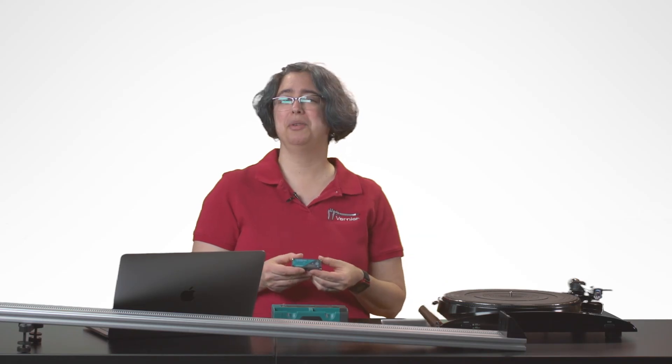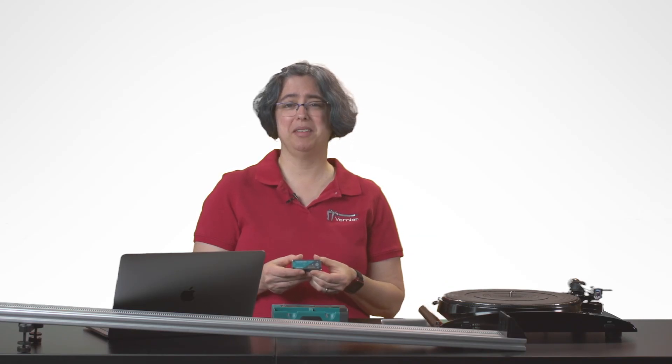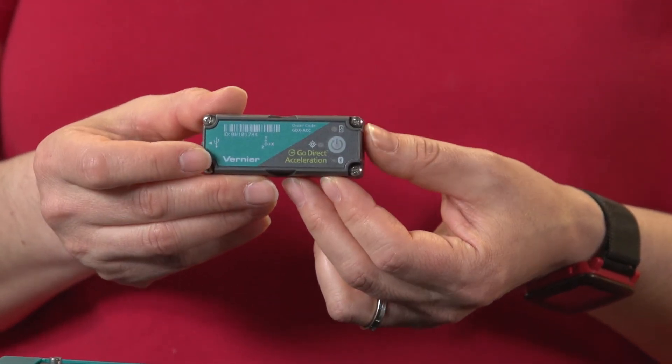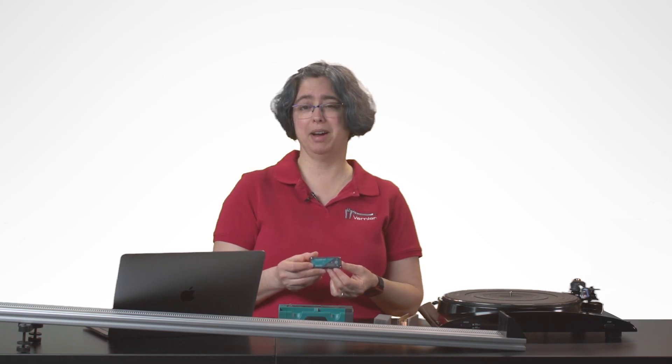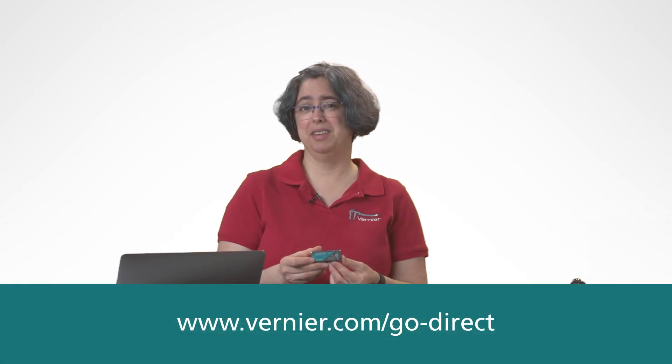These are only two of the possible uses for the Go Direct Acceleration Sensor. With its small size, it's the perfect device to connect to your phone, put in your pocket, and take on a roller coaster or other amusement park ride. We'd love to hear your suggestions. For more information on this sensor, please refer to our website.